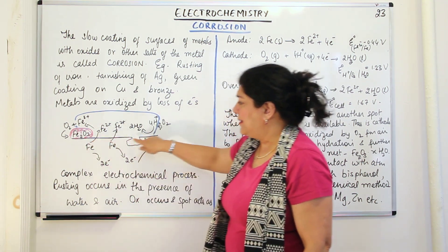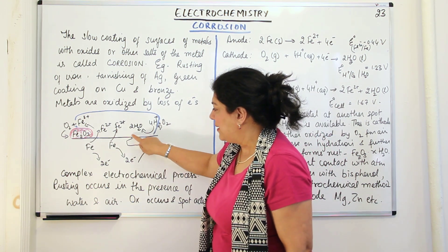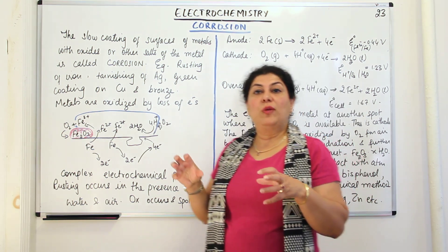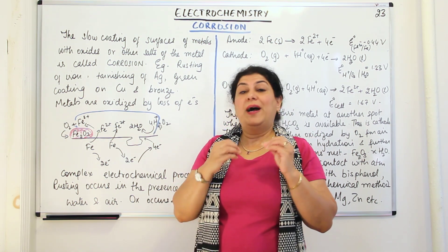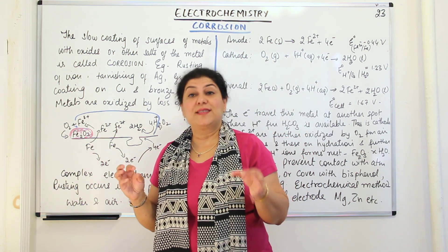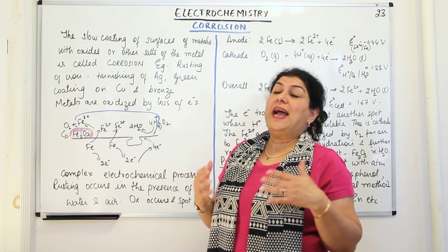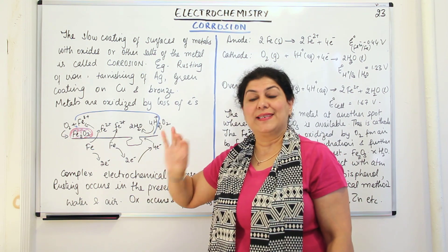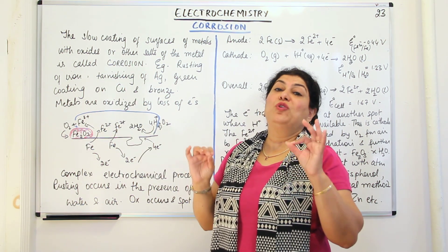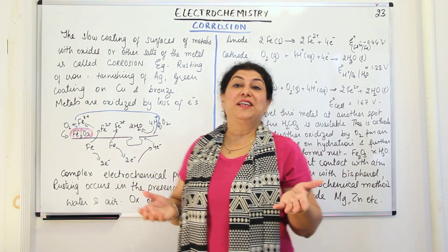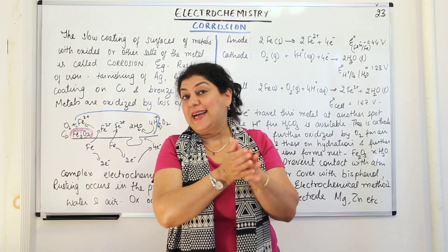Let us say this is the surface of the metal iron. On the surface you can observe a crack, a little break. At places the iron object may develop a crack and as a result the iron gets exposed to the atmosphere. Some atoms of iron may get oxidized — they may react with oxygen and get oxidized to form ferrous ions. That point at which the iron got exposed and reacted with atmospheric oxygen to form the ferrous ion would start acting as the anode, because the technical definition of anode is the electrode at which oxidation occurs.